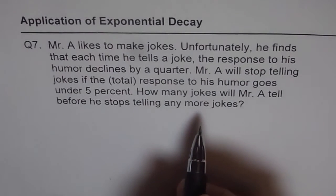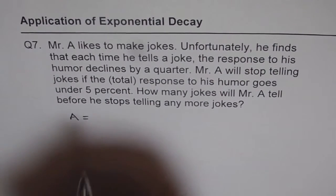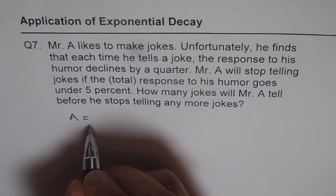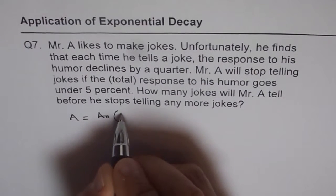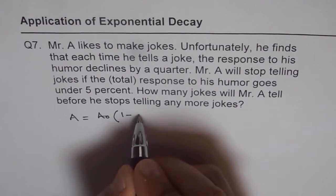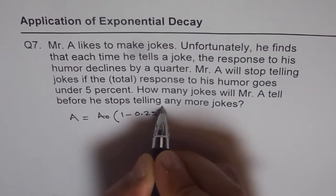So we can write this in the form of an exponential equation where we say, the amount of humor is equal to initial amount of humor times the rate 1 minus quarter, which is 1 minus 0.25 to the power of n,